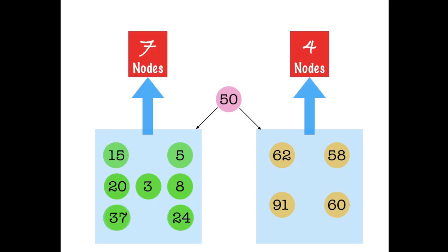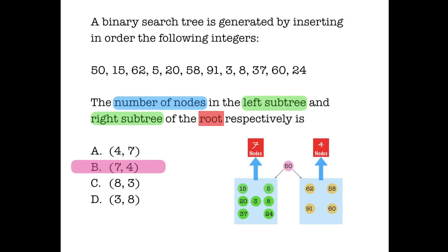The left subtree has seven nodes, the right subtree has four nodes, so the answer is option number B.